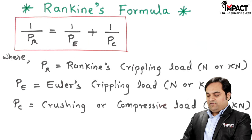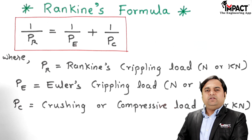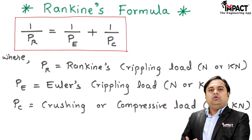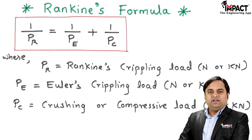These three loads are Rankine's crippling load, Euler's crippling load, and the crushing or compressive load. While deriving Euler's crippling load, an assumption was made that it is applicable only for long columns. So if the column is short or medium, we cannot apply Euler's formula and we need an alternate formula — that is the Rankine's formula.